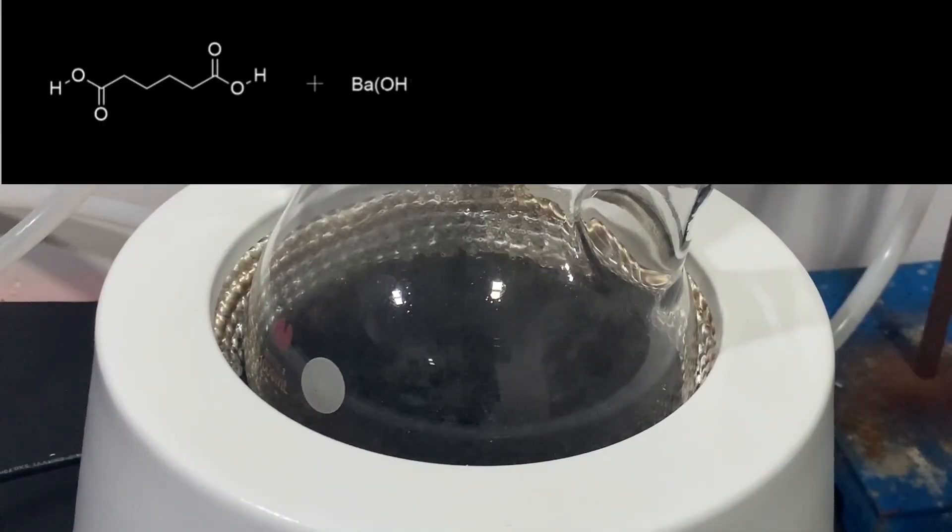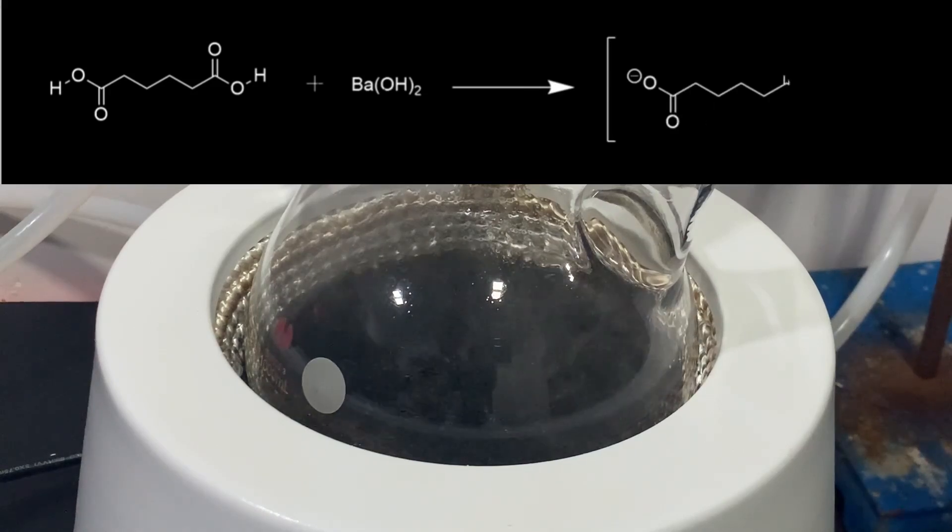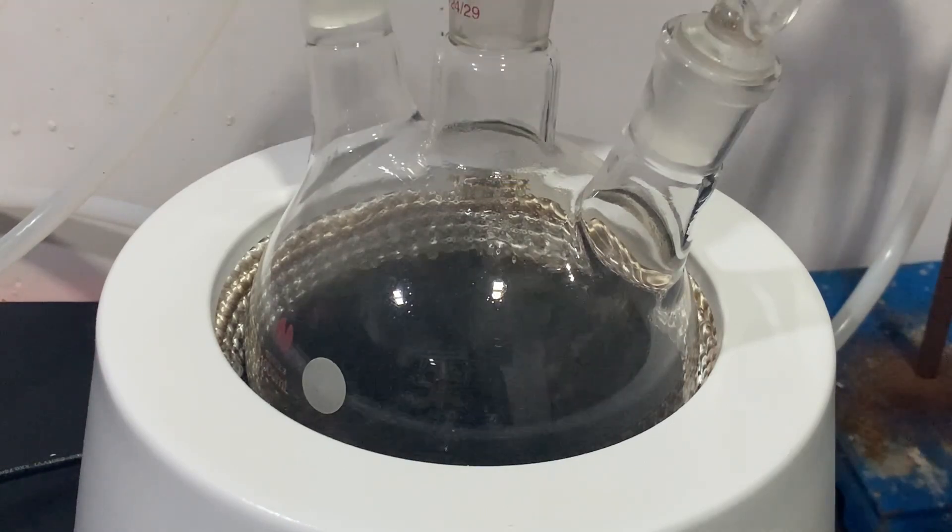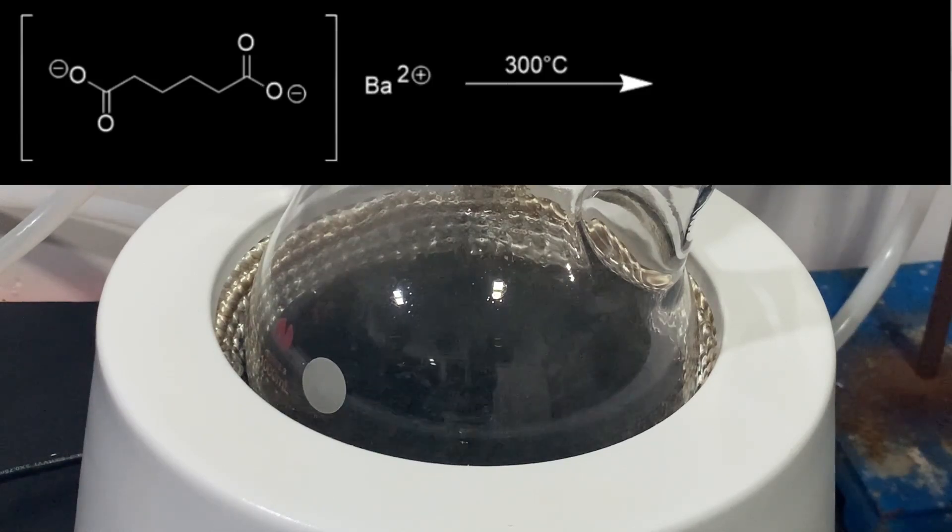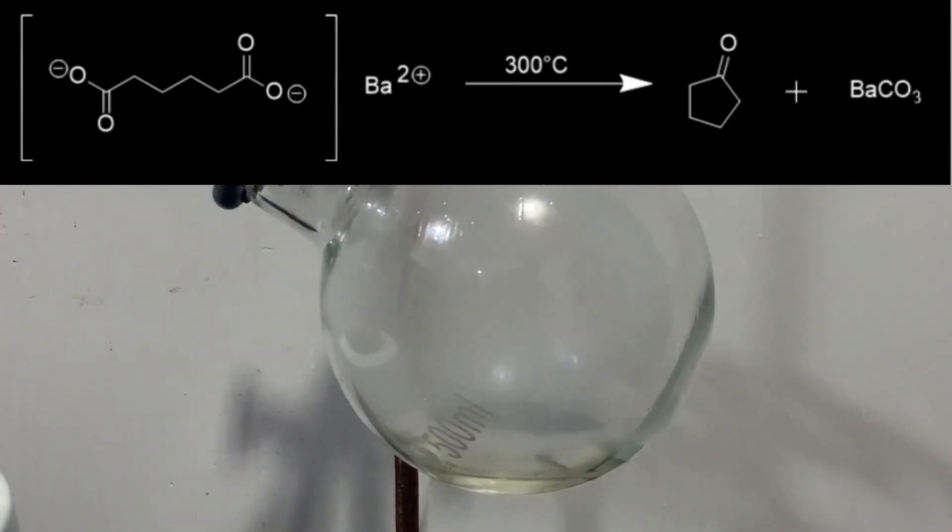In the first step of the reaction, adipic acid is deprotonated by barium hydroxide to form barium adipate and water. At a temperature of 300 degrees Celsius, the barium adipate decomposes into cyclopentanone and barium carbonate.